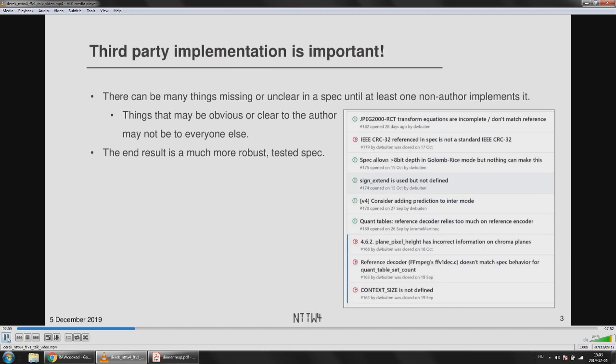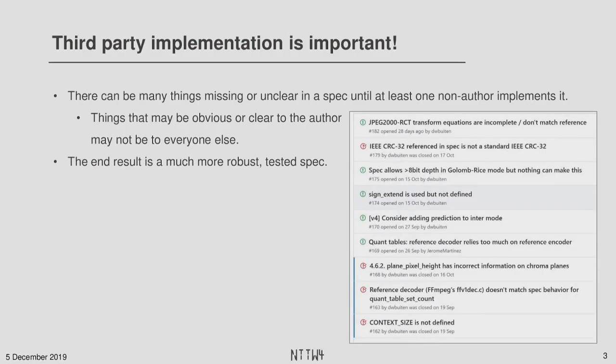So as you may have guessed, it turns out that third-party implementations are really important for the robustness of a spec. I found while implementing the FFV1 spec that there were a lot of little bits that either weren't much in the spec, were wrong in the spec, or only existed in code itself. But as a result of that, we improved the spec. I opened lots of bugs, sent some pull requests. So the end result is that the FFV1 spec is better than it would have been if I hadn't done this. And that was kind of the point, because a better specification is better for everyone.